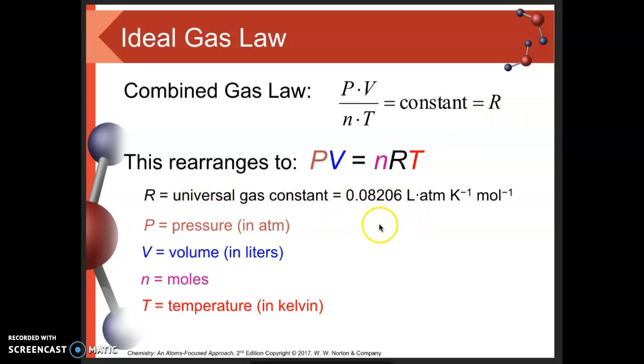Now the universal gas constant comes in a number of different forms, but the most common way that we see the ideal gas law arranged is not PV over nT equals R, but rearranged into this form: PV, pressure times volume, is equal to nRT. That is the number of moles of the gas multiplied by the universal gas constant multiplied by the absolute temperature in degrees Kelvin.